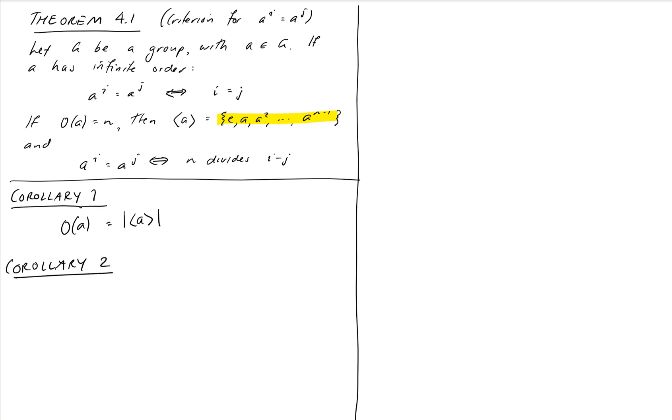So the second corollary is we let a have order n, then if a to the k equals e, then n divides k. So this is the one that says that if a to the power of an integer is the identity, then it's a multiple of the order. And how do we use that? How do we treat that as a corollary from our theorem?